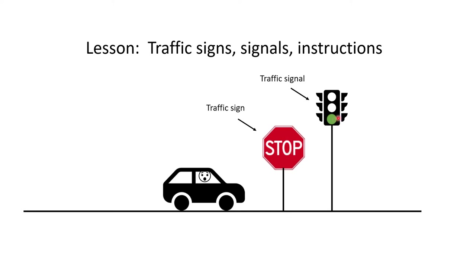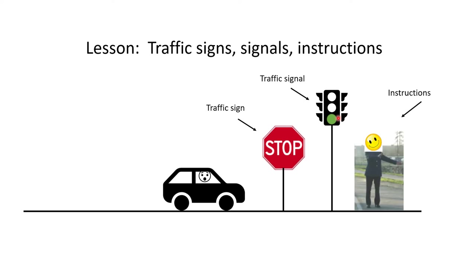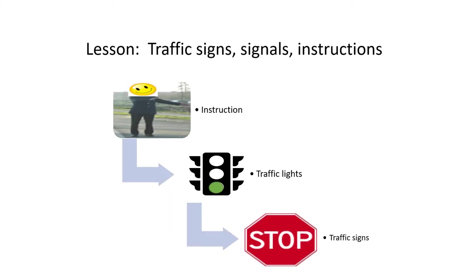Another scenario is that an authorized person may also be giving you instructions to stop. So if there is a conflicting traffic sign, a traffic signal, and instructions from an authorized person, whom should you follow?